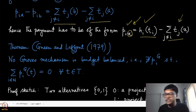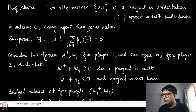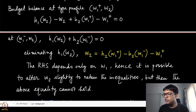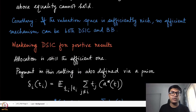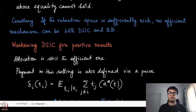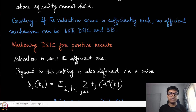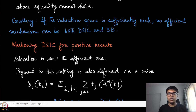We are not going to go into the proof of this result as it is a little elaborate, but the proof sketch is available in the notes. To summarize combining these two results: if the valuation space is sufficiently rich, then no efficient mechanism can be both DSIC and budget balanced. That is the conclusion.